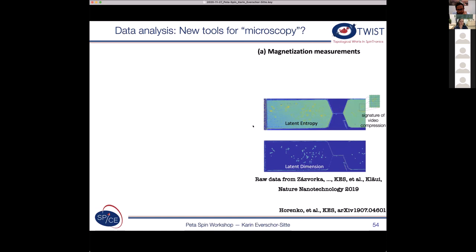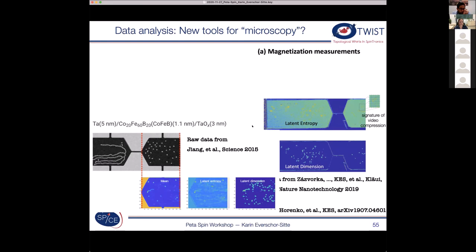We also looked at data from Axel's group. I think he's also in the audience. And these are earlier data where the idea was not to look at this diffusion. So here you can also see a lot of impact coming from the sample, where you have probably a lot of impurities or inhomogeneities in these samples.